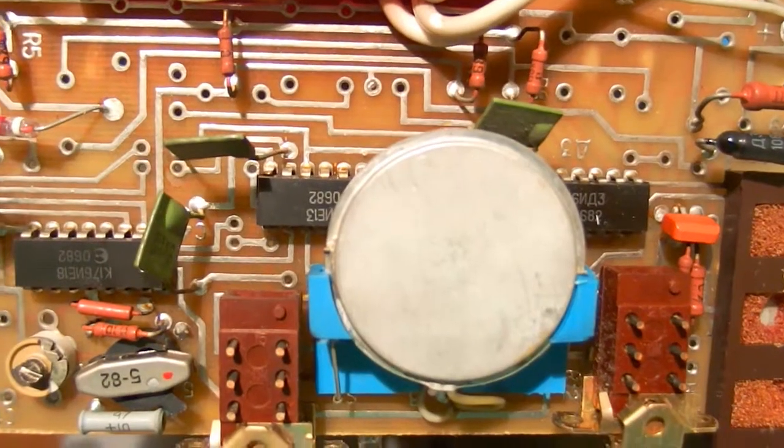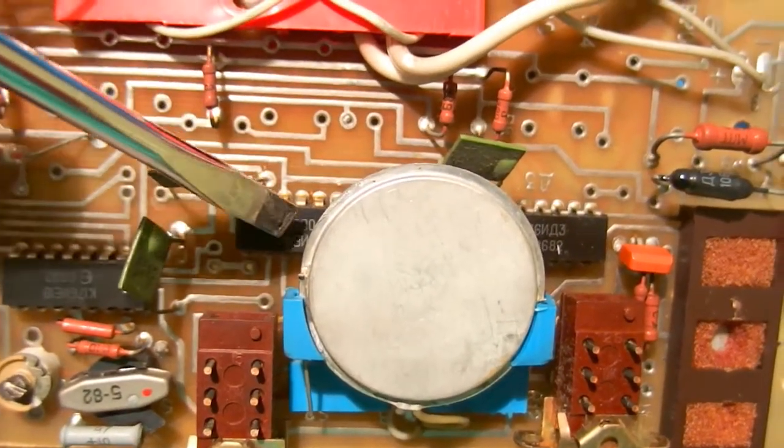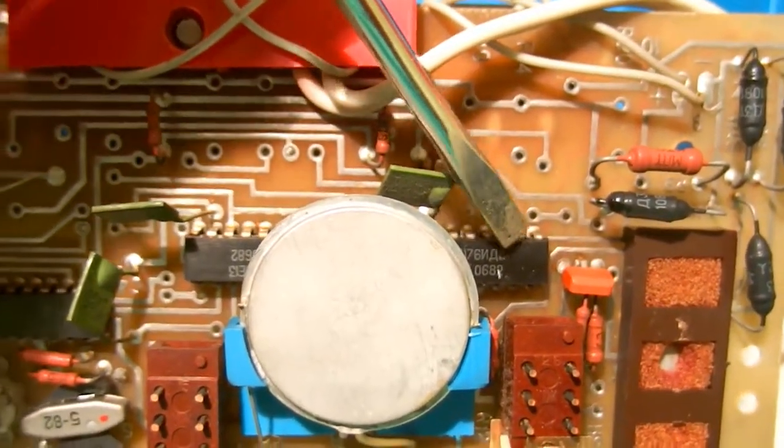And the three chips are crystal oscillator with pre-scaler, this is the main clock controller, and this is the BCD to 7 segment decoder.